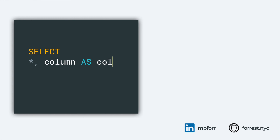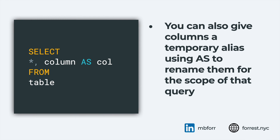I'll also talk about creating columns on the fly. This is known as an alias. In this query, we're selecting star — everything from the table — as well as another column and giving it a new, temporary name. We use 'column AS col', just a short name limited to the scope of this query. We're not creating a new column; it's just going to create a copy of that column with a new name. You can also use functions to do this.